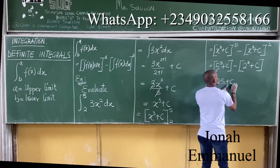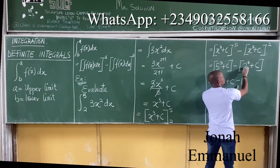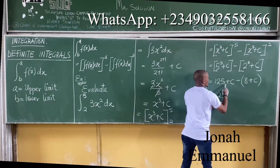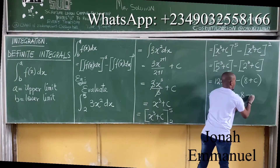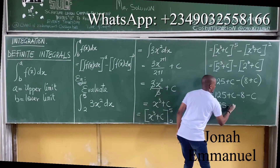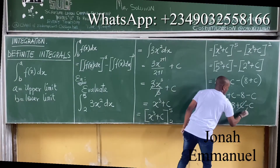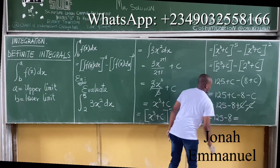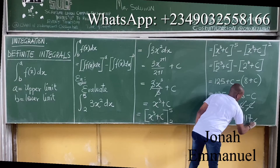Since the minus addresses everything in the bracket: 125 plus C minus 8 minus C. The C and minus C cancel out, giving 125 minus 8, which equals 117. So that's your answer.